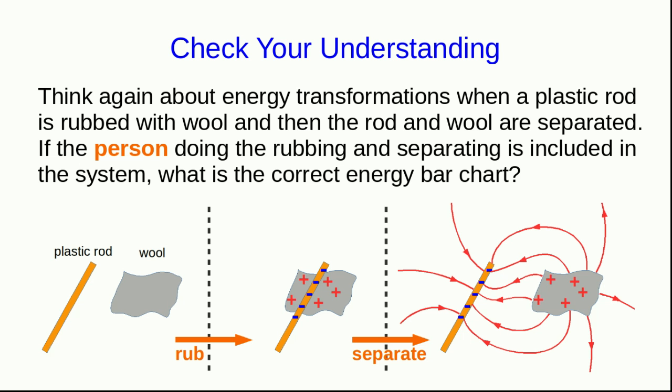It's time to check your understanding. So think again about the plastic rod being rubbed with the wool and the energy transformations. But this time, suppose you are rubbing the plastic rod with the wool and we include you in the system. Draw the correct energy bar chart now that you are included in the system.